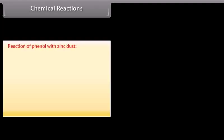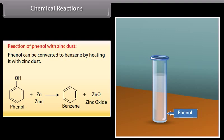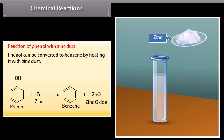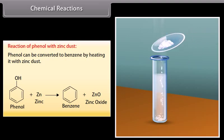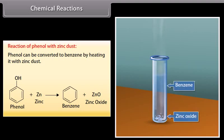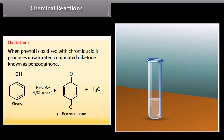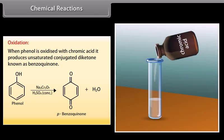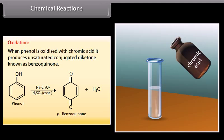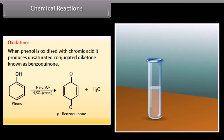Reaction of phenol with zinc dust: phenol can be converted to benzene by heating it with zinc dust. Oxidation: when phenol is oxidized with chromic acid, it produces an unsaturated conjugated diketone known as benzoquinone.